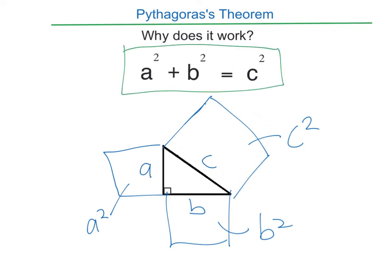By using areas for the rectangle, for the squares on the sides of the triangle. So a squared plus b squared equals c squared is a rule that works for any triangle with a right angle in it.